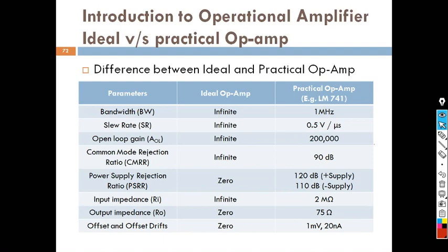As I said in the previous class, there are several parameters: bandwidth, slew rate, open loop gain, common mode rejection ratio, power supply rejection ratio, input impedance, output impedance, and offset and drift.